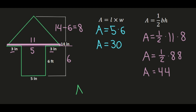Now I'll find the total area of the composite figure by adding the area of the rectangle and the area of the triangle together. So 30 plus 44 is my total composite area. 30 plus 44 equals 74, and because I'm working in inches, my composite area will be 74 inches squared.